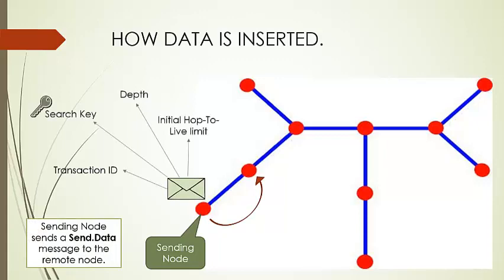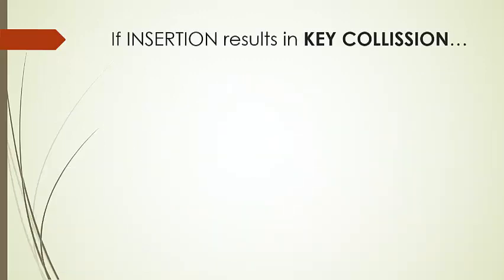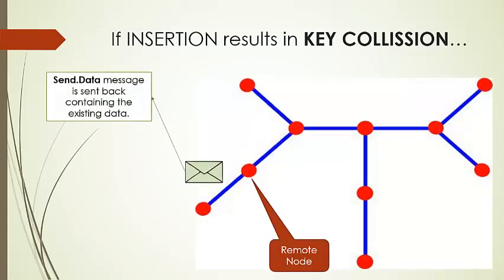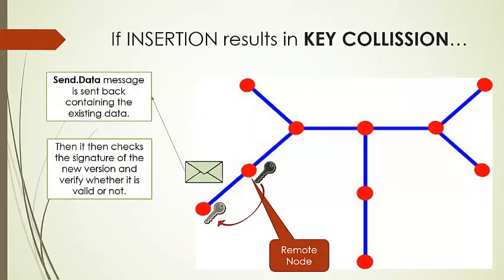Now if the insertion is made in the remote node which results in key collision, then the remote node sends a message back containing the existing data. Then it checks the signature of both keys and verifies whether the new version is valid or not. If it is valid, the new version replaces the older version.